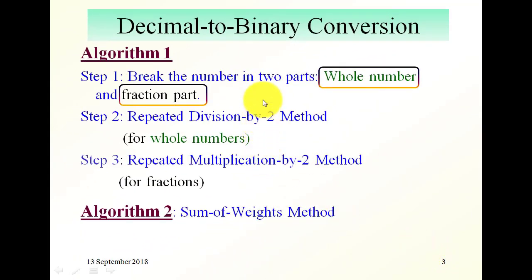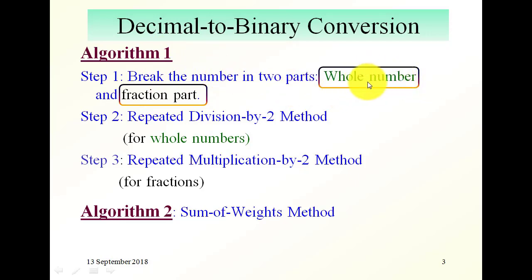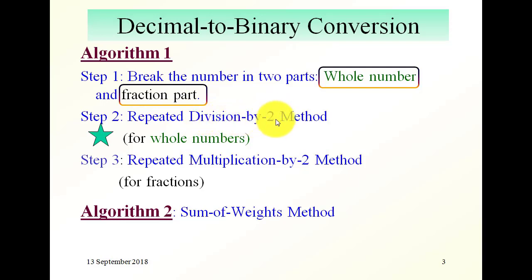Converting from decimal to binary. We have two algorithms to do this. In algorithm 1, we break the number into two parts: the whole part and the fractional part. For the whole part, we do repeated division by 2, since we are converting into binary.